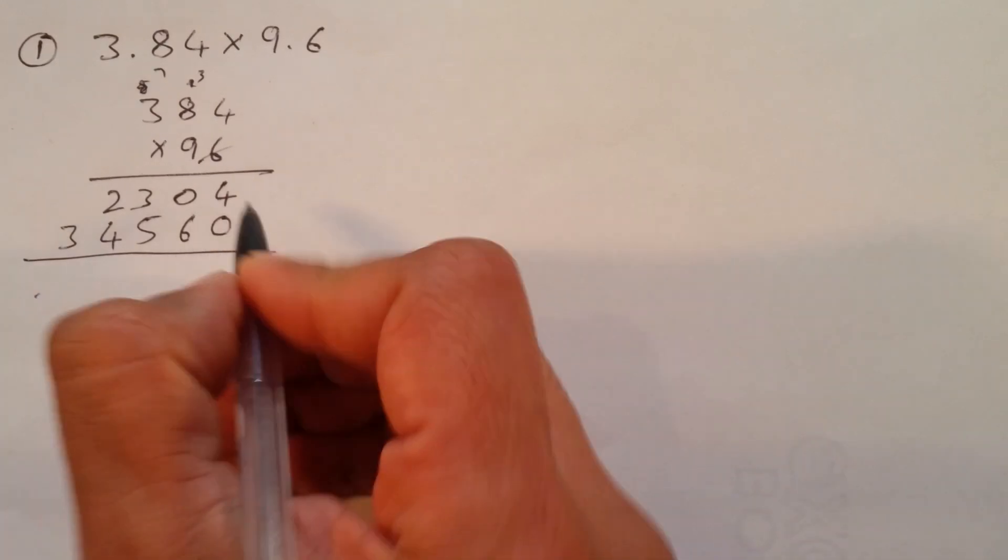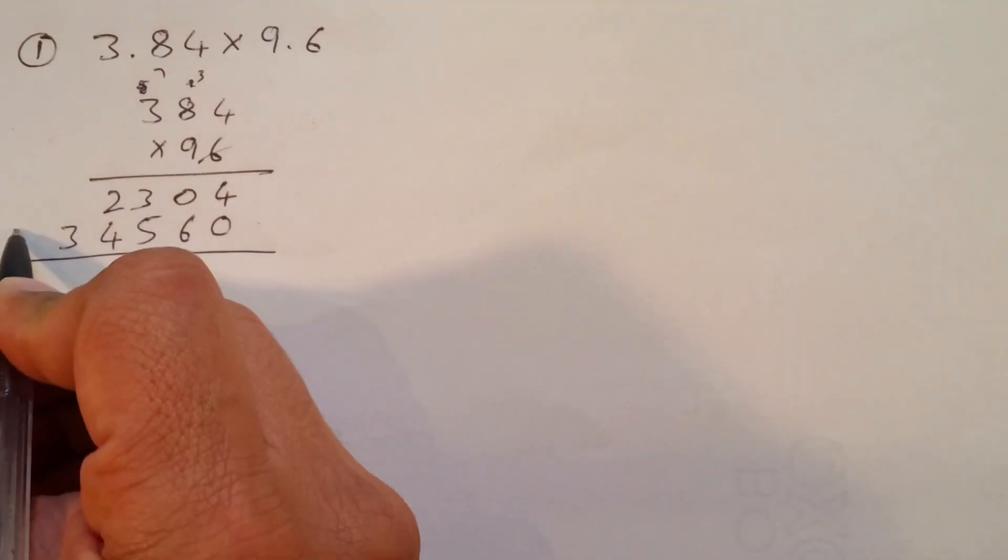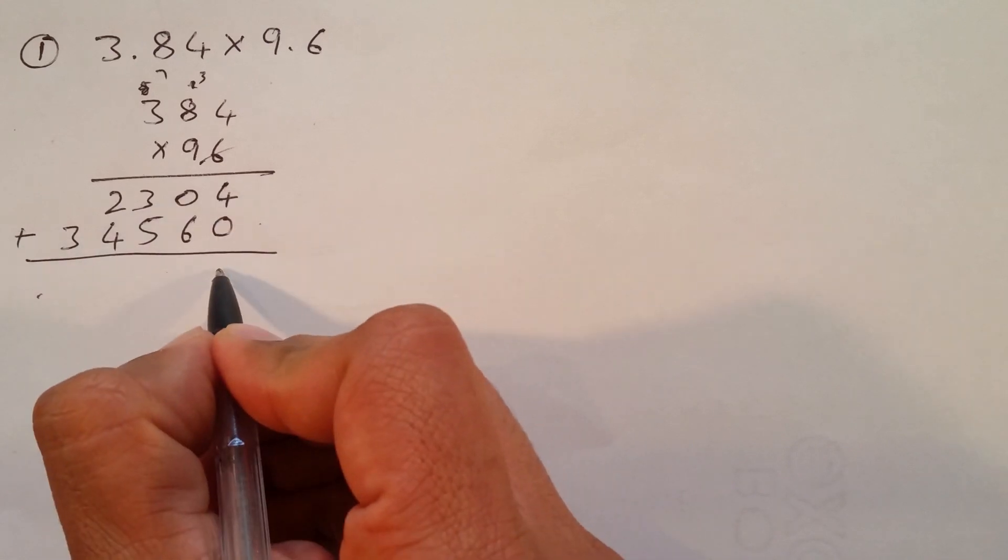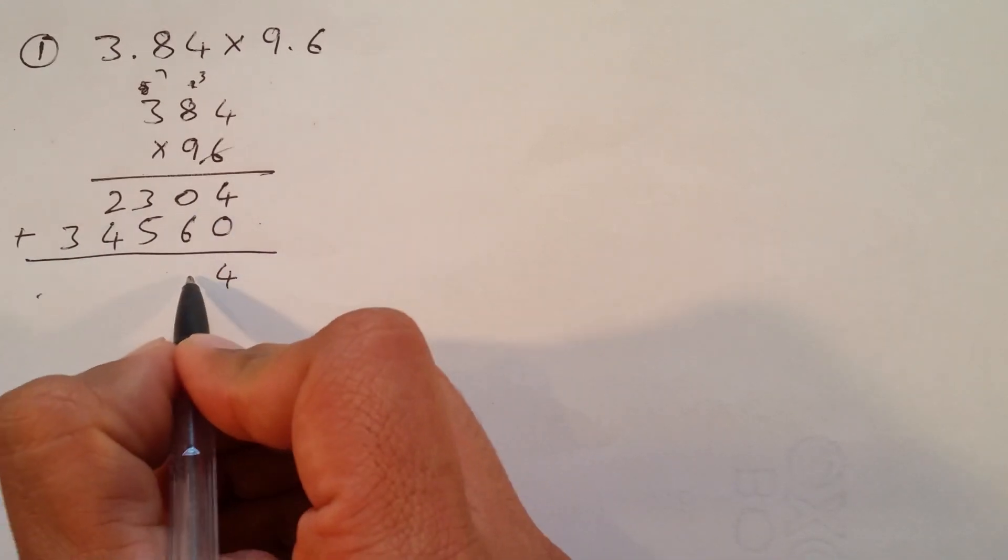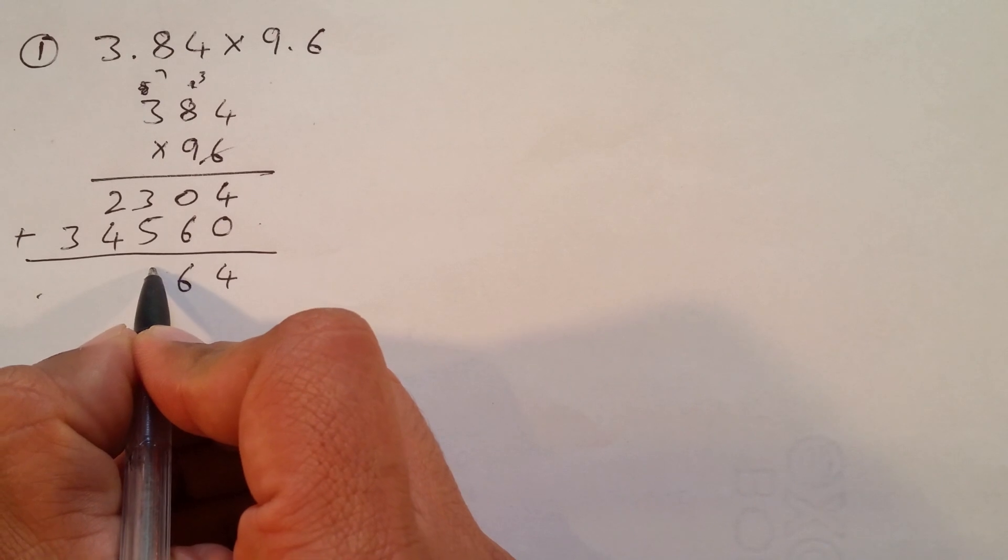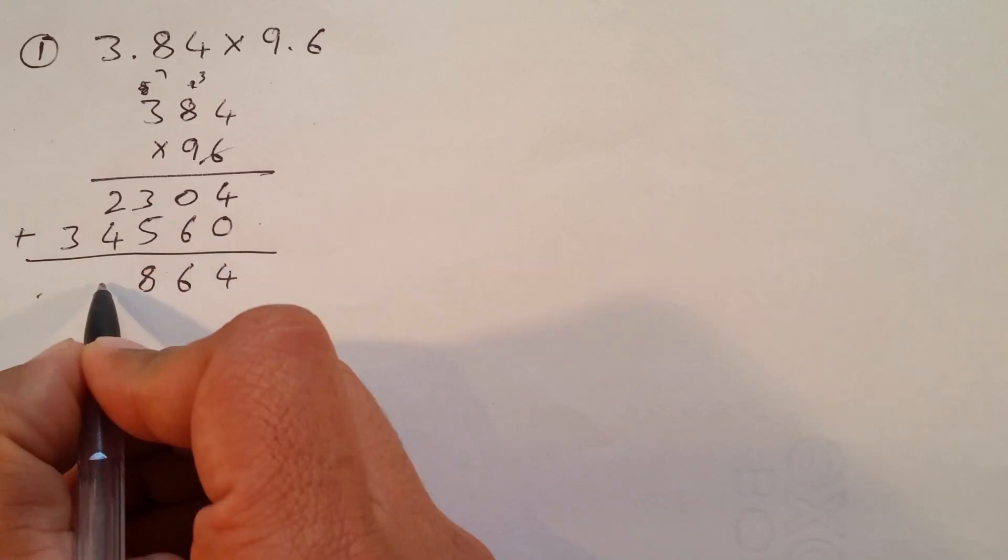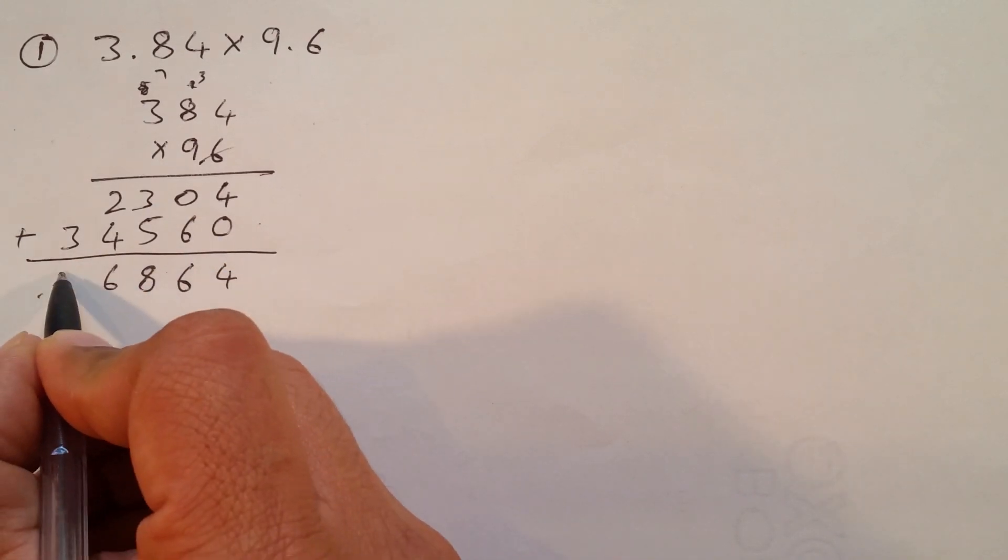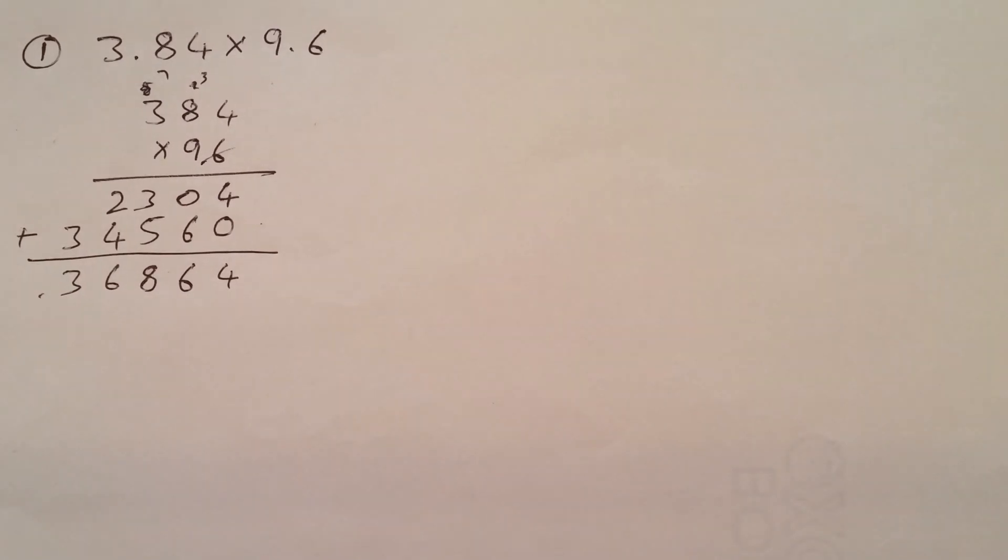That's it. So, our last bit is, we are going to add them. 4 plus 0, 4. 6 plus 0, 6. 5 plus 3, 8. 4 plus 2, 6. 6 and 3. Bring it down. Done.